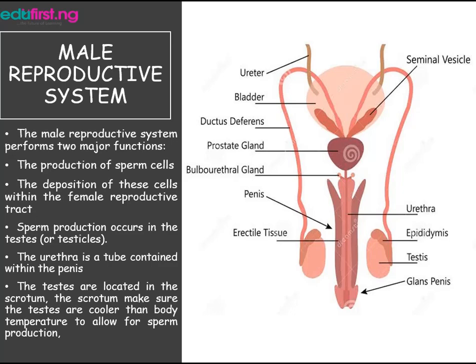The testis also produce the male sex hormone testosterone. This regulates the maturation of sperm and the development of sex characteristics in males, like a deepened voice and facial hair.